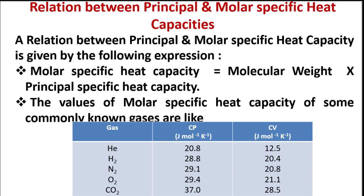Helium has Cp equal to 20.8 and Cv equal to 12.5. Hydrogen (H2) has Cp equal to 28.8 and Cv equal to 20.4. Nitrogen (N2) has Cp equal to 29.1 and Cv equal to 20.8.